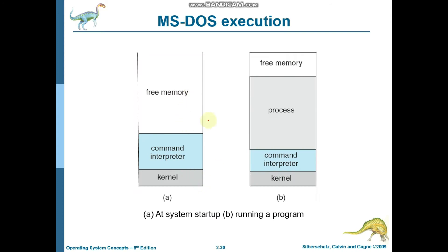Here you can see that when a process is loaded, Figure A shows the initial structure. Figure A represents when you have just started the system — you have a command interpreter called the shell, the kernel which is the major part of the operating system, and the rest of memory is not utilized. But after loading the process into memory, as shown in Figure B, you have a number of processes in that area and the remaining free memory size is limited.